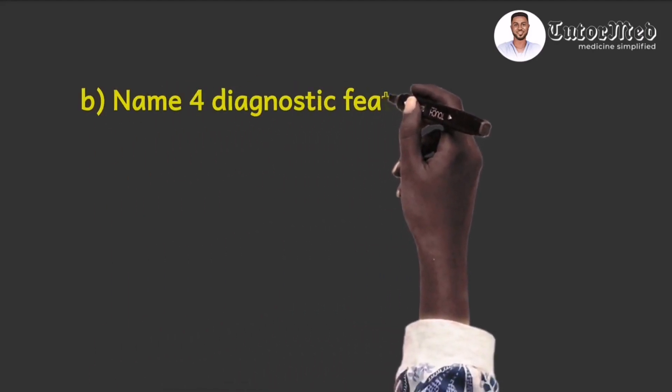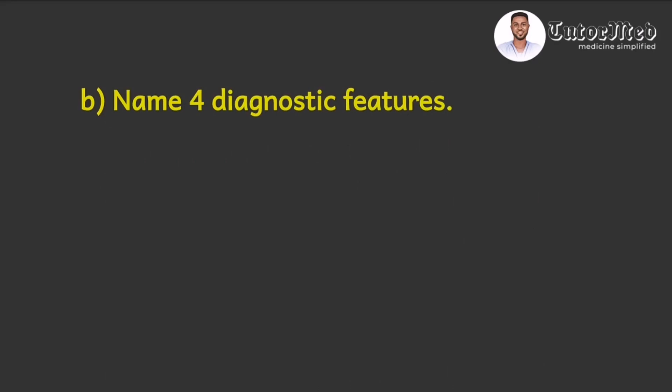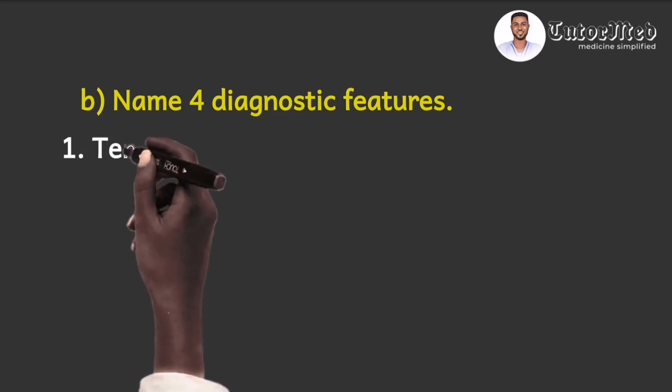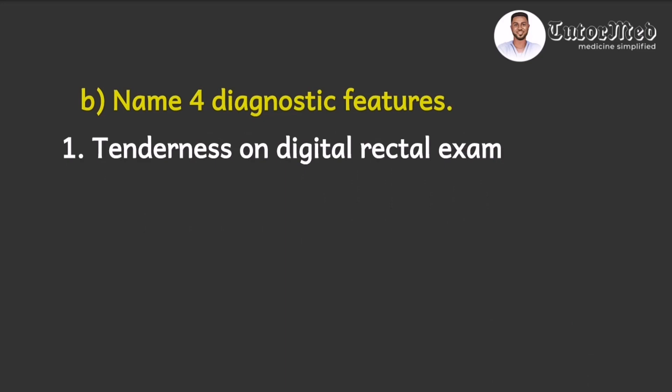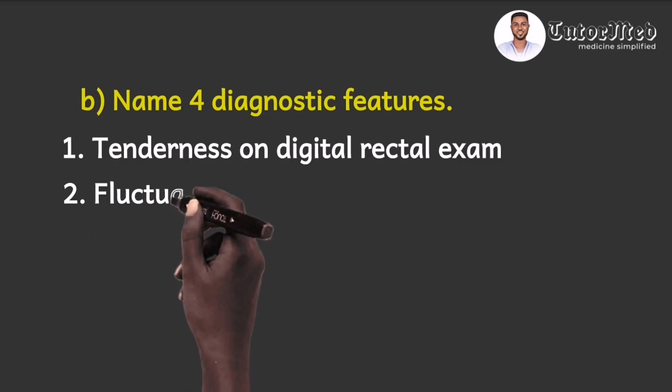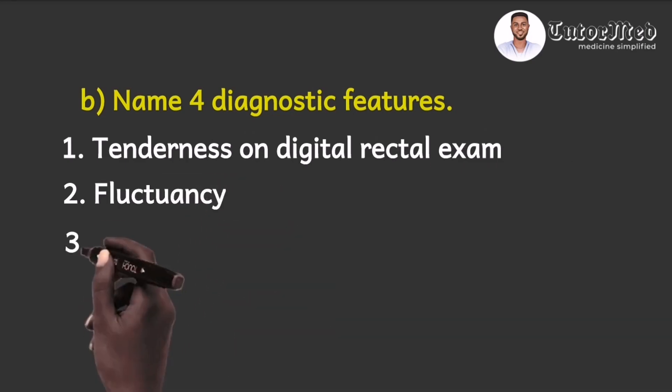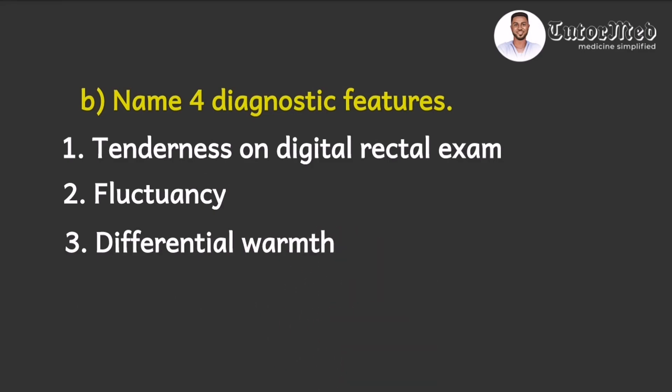The second question asked by the examiners was: name four diagnostic features. This is an acute suppurative inflammation, so you would have the features of acute inflammation. There will be tenderness on the digital rectal exam. Because you have an abscess, you would have fluctuancy — so you'll be palpating a fluctuant mass. Then you can have differential warmth: when you compare the right side to the left side, you feel that the right side is warmer. And you may have induration as well.